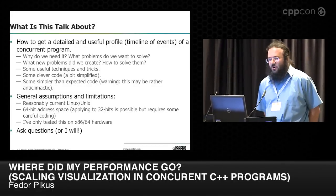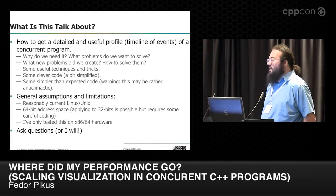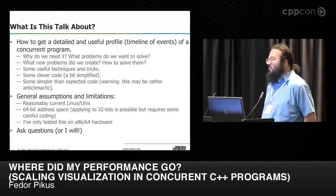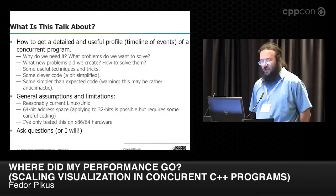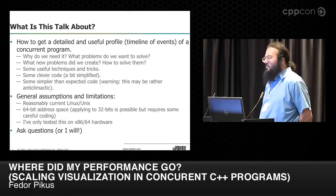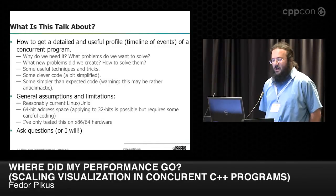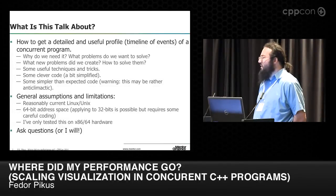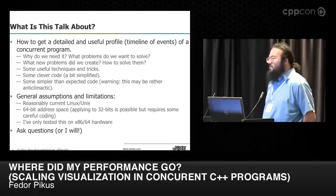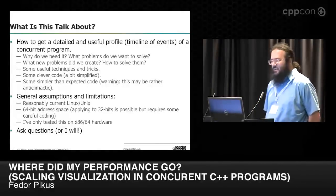I'll talk about how to get the detailed and useful profile in the form of a timeline of events in a concurrent program — what happened before and after, and during something else was happening. We'll have some hopefully useful techniques for concurrent programming, and there will be some code that I had to simplify to fit on the slides, and some code that actually is that simple.